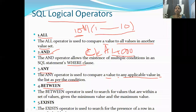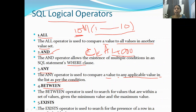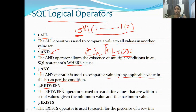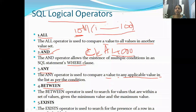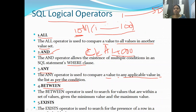BETWEEN is used to check if a value falls within a range. For example, if I have numbers 1 to 100 but I only want to check whether 10 exists between 1 and 50, I use the BETWEEN condition. So only values from 1 to 50 are considered for comparison.